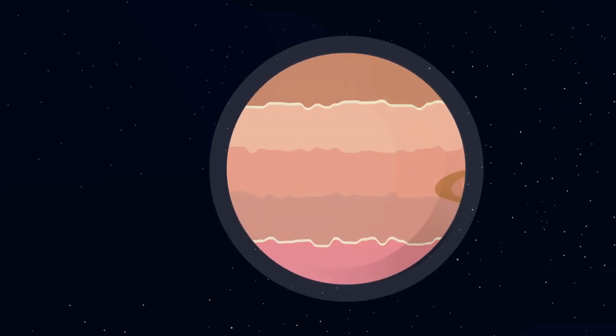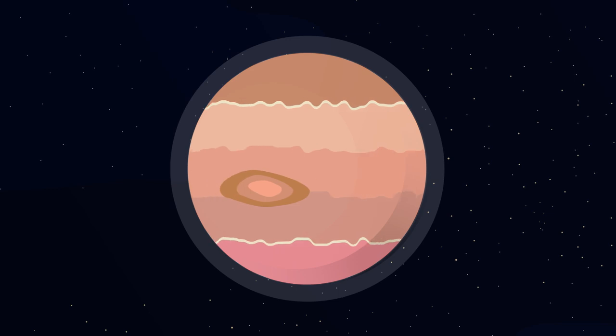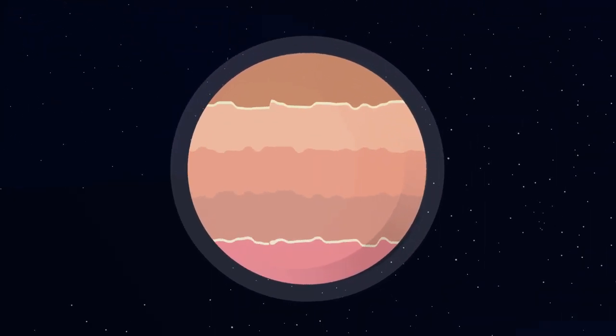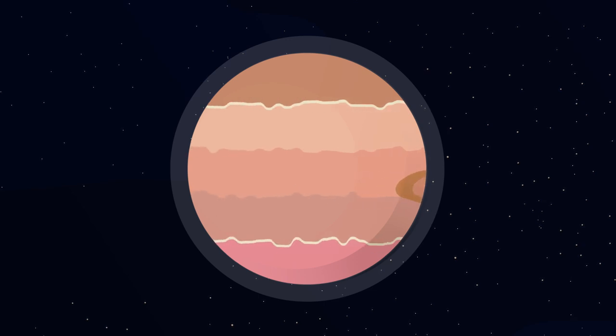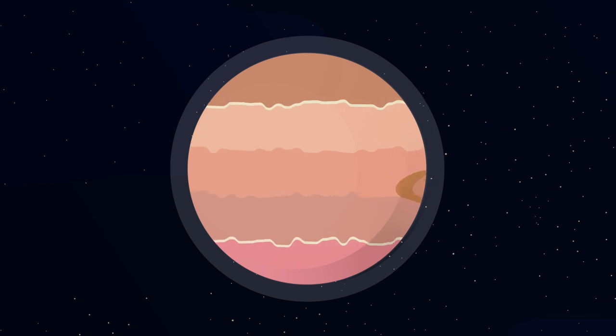Next in line is Jupiter, the first of the Jovian planets. Jupiter is the largest planet in the solar system. It spins at a high speed, creating stripes along the planet's equator and massive swirls in its atmosphere.